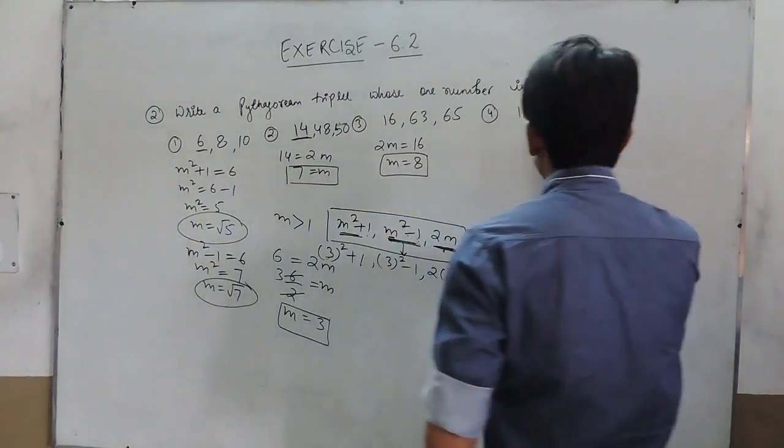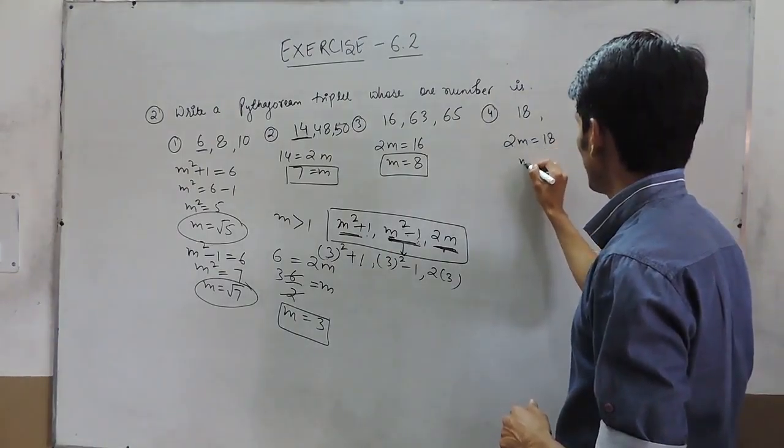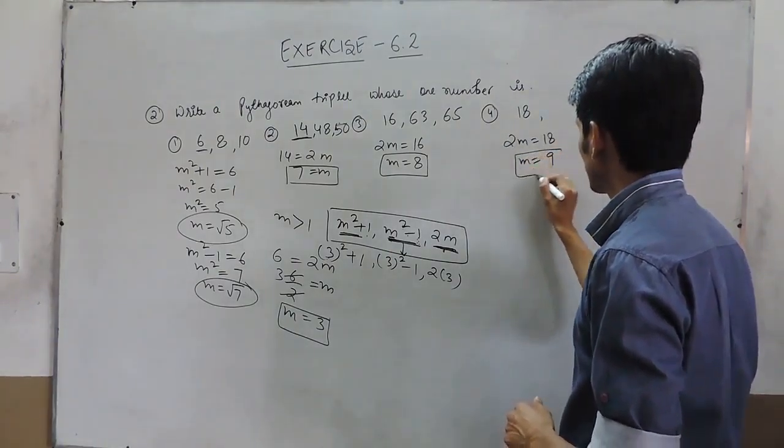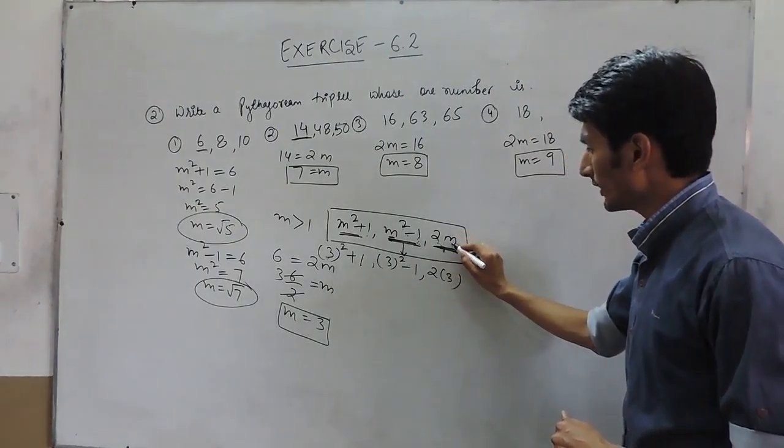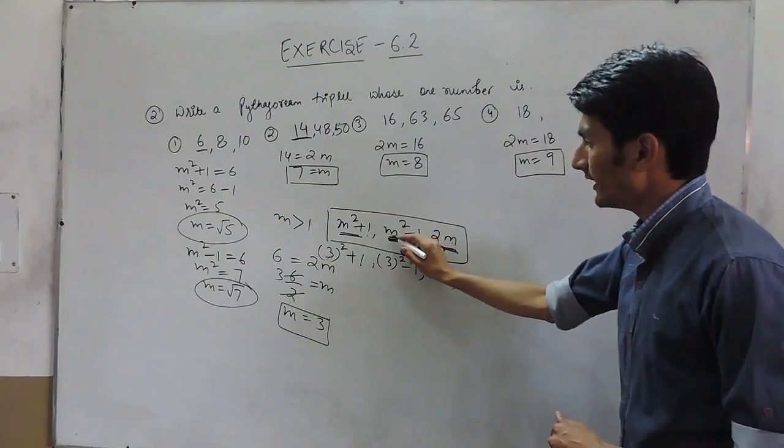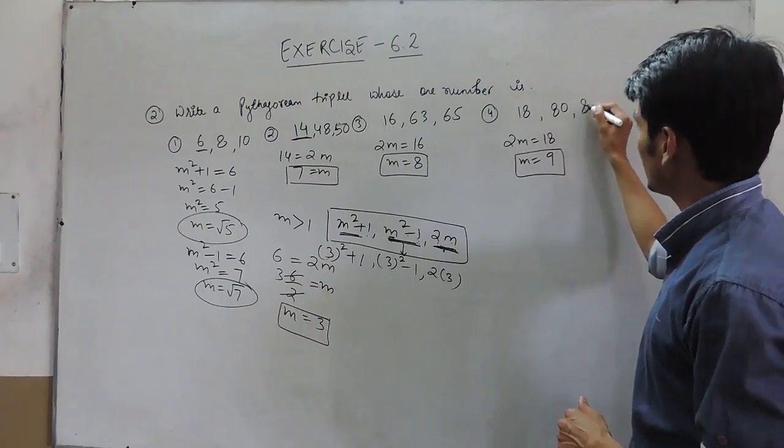In the last case, here the value of 2m equals 18, so the value of m must be 9. If one of the numbers is 18 means 2 × 9, the remainder must be 9² = 81 - 1 which is 80 and 82.